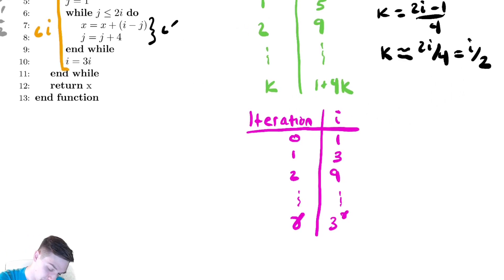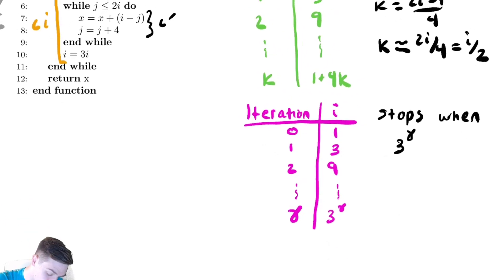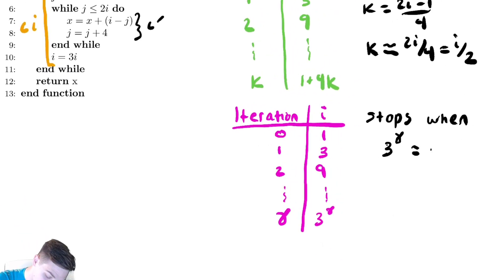And after the gamma iteration, we have 3 to the gamma. When does this stop? Well, it stops when my generic expression for i, which is 3 to the gamma, is equal to the stopping condition, which is n. Solve that for gamma, and we get gamma equals log base 3 of n. That quantity can be helpful, but we'll actually see that that actual value has little impact on this particular problem.